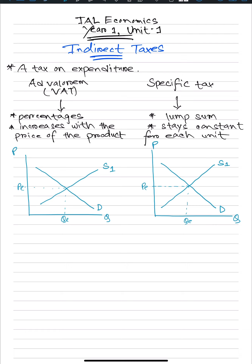The only difference is that for ad valorem tax, the supply curve will make a pivotal shift, and for specific tax, the supply curve will make a parallel shift. Why? Because for ad valorem tax, the taxes increase with the price of the product. As the price keeps increasing along this line, the value of the tax keeps increasing — therefore this is a pivotal shift. There is more distance over here than over here. For specific tax, it is a parallel shift because it is a lump sum and stays constant for each unit — therefore this distance will always remain constant.